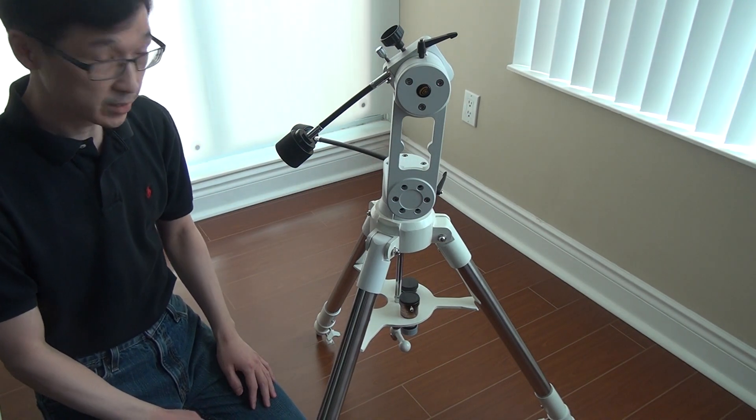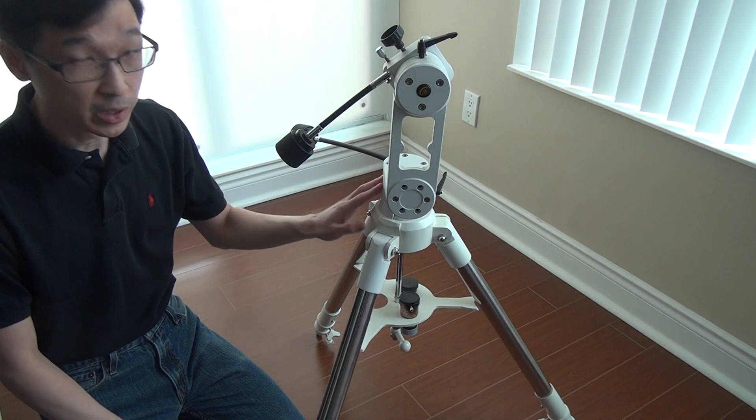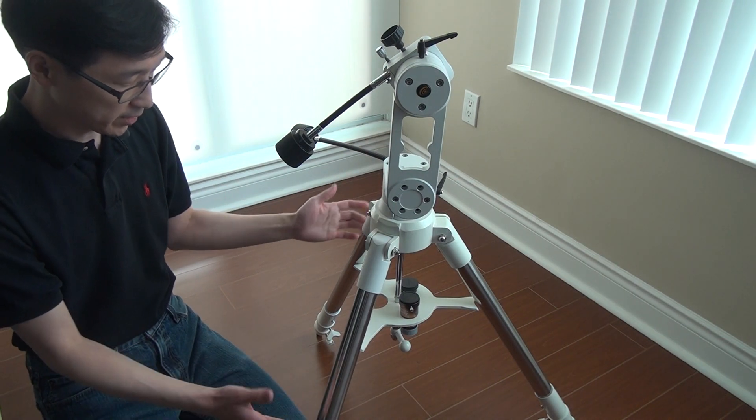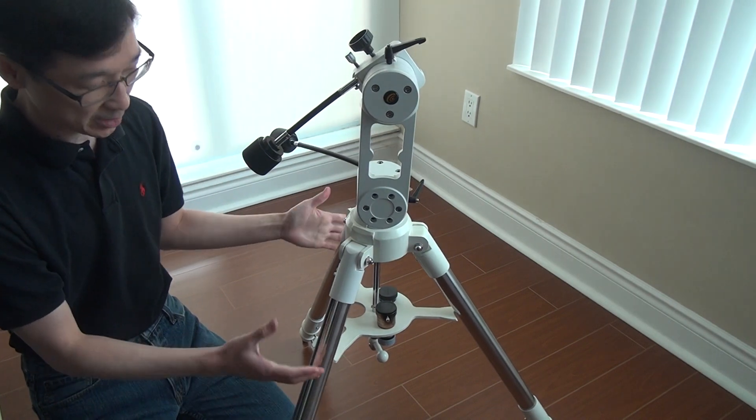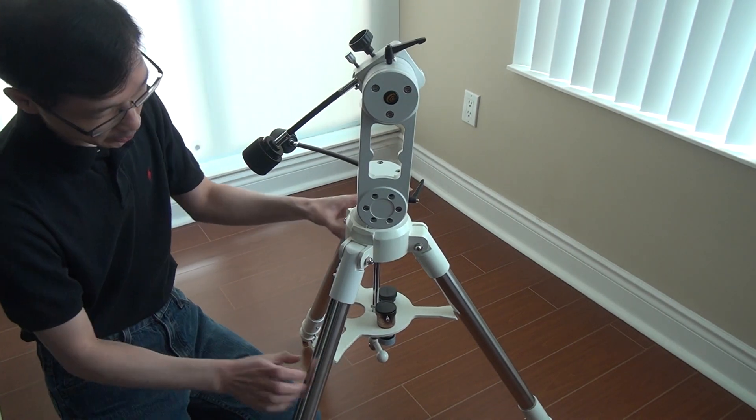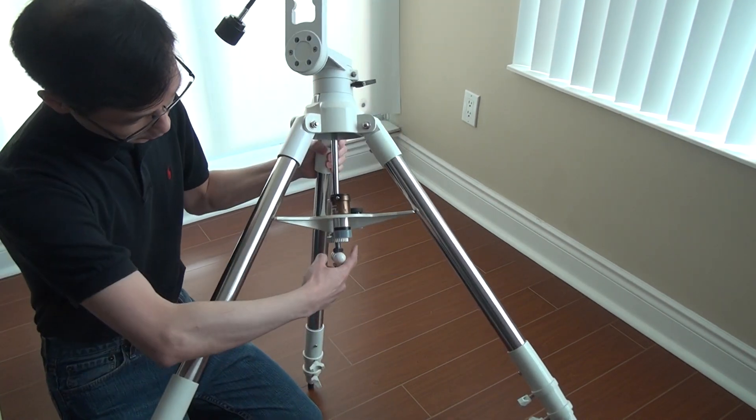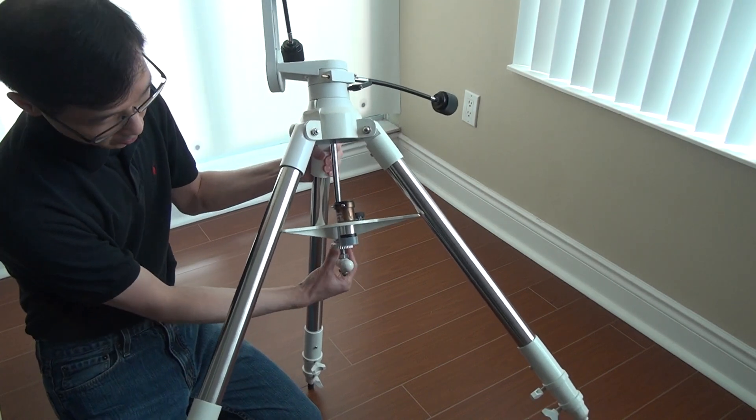So the first one is how to fold the legs on this mount. When you want to transport it, it's obviously not very easy to transport in this position. So what you want to do is loosen the tension plate here.